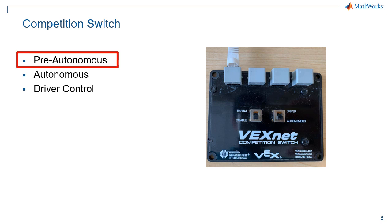The first mode of operation is called Pre-Autonomous. It occurs when the Enable Switch is set to Disabled and the Mode Switch is set to Autonomous. In this stage, participants normally program things like selecting modes, choosing different autonomous routines for different starting positions, or adjusting parameters such as different gains or gamepad configurations for different drivers.